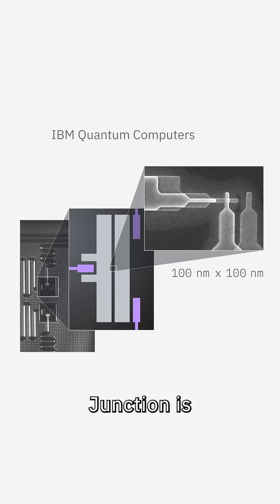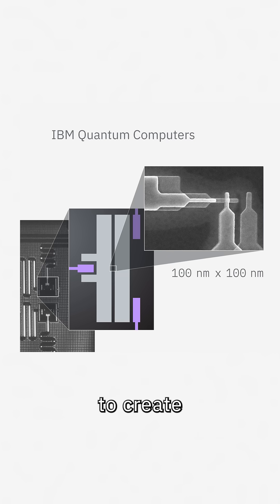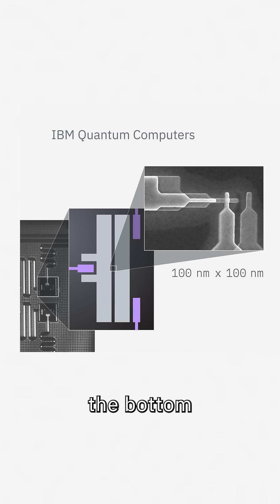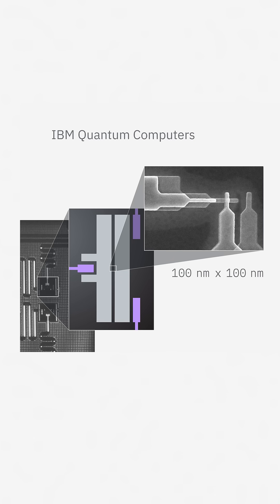A Josephson Junction is an element that can be used to create an artificial atom with multiple energy levels, and we isolate the bottom two energy levels as our qubit states.